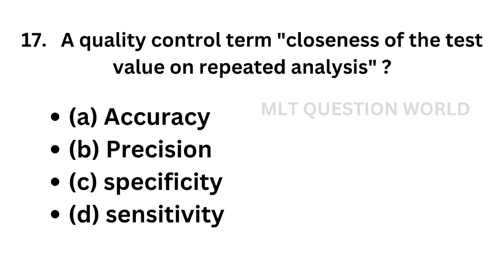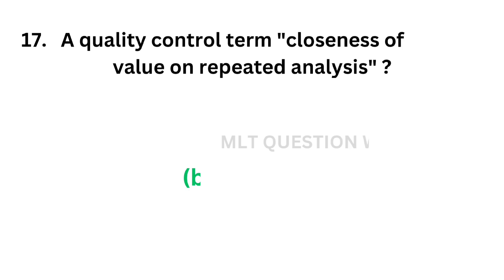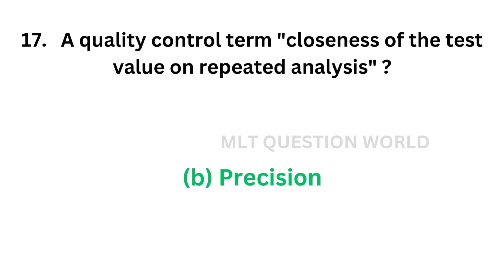Question number 17. A quality control term — the closeness of the test value on repeated analysis: option A, Accuracy; option B, Precision; option C, Specificity; option D, Sensitivity. The correct answer is option B, Precision.